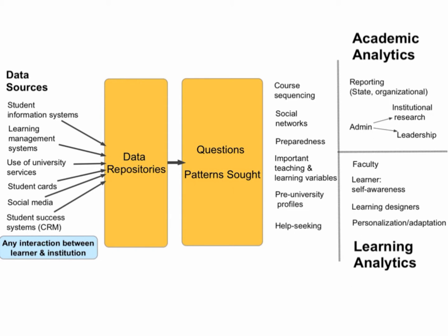I haven't seen a lot of systems that have done a great job with putting together an integrated repository that brings these different data sets together, partly because it's not a very simple process. But the general idea is you have a range of data sets and a range of questions you're asking of that data. For example, how does being socially connected within a course impact student success, and are there ways to help foster better social connections if there's a relationship between social positioning in a network and academic performance?